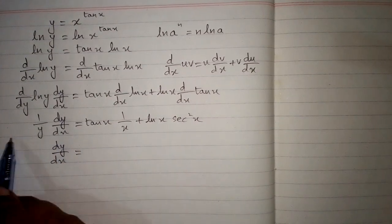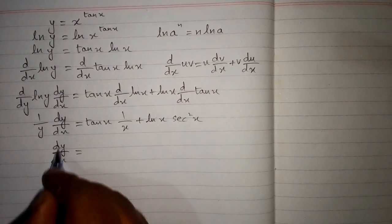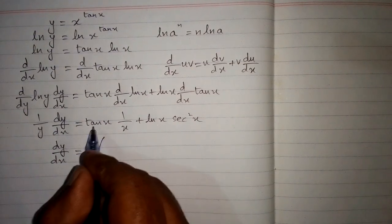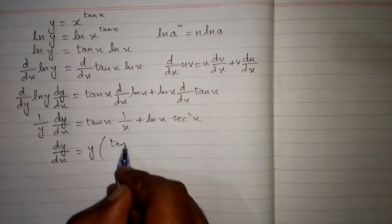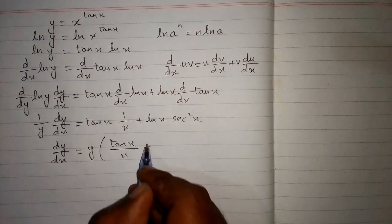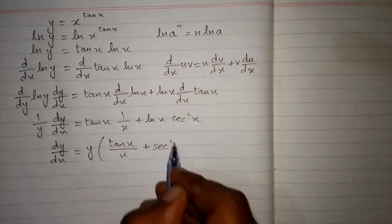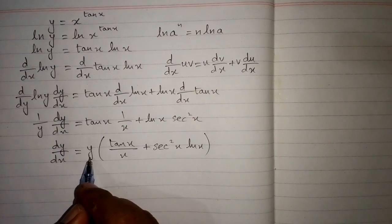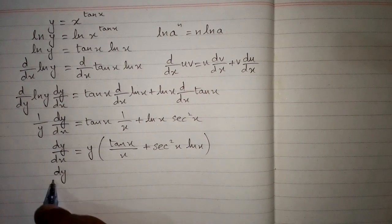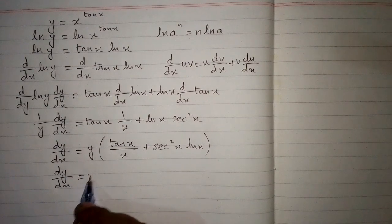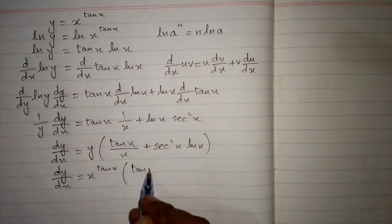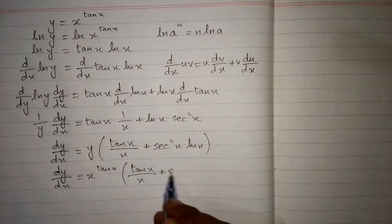Now we will multiply both sides by y, so we have dy by dx is equal to y times this can be written as 10x upon x, and this can be written as 10 multiplied by ln x. Now we will put the value of y which is x to the power 10x, and this is the answer.